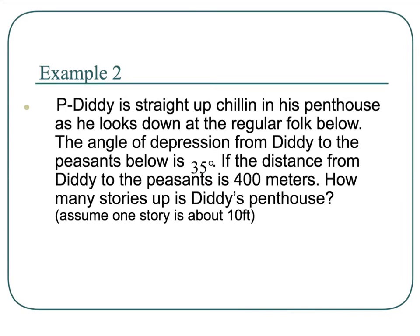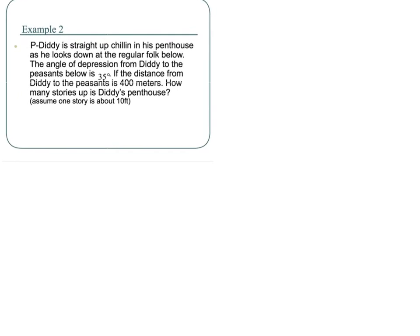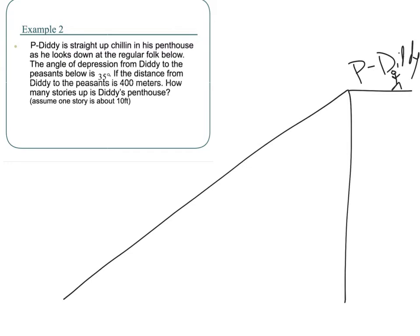All right, we've got P. Diddy is straight up chilling in his penthouse as he looks down at the regular folk below. The angle of depression from Diddy to the peasants below is 35 degrees. We are the peasants in this case, children. If the distance from Diddy to the peasants is 400 meters, how many stories up is Diddy's penthouse? Assume one story is about 10 feet. Well, let's draw this. So, Diddy's just chilling, right? He's up in his penthouse. I'm going to draw the building up here.